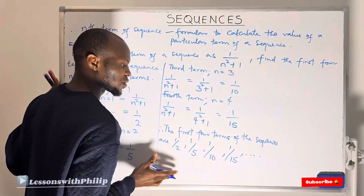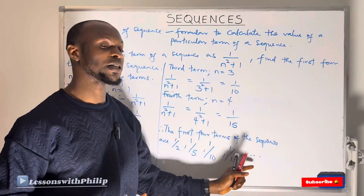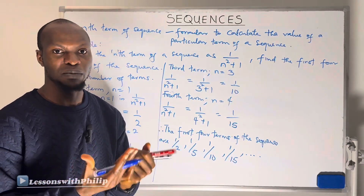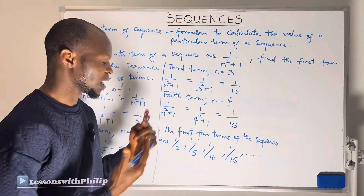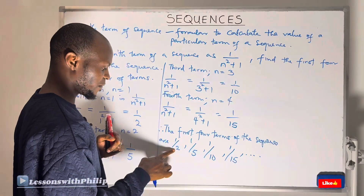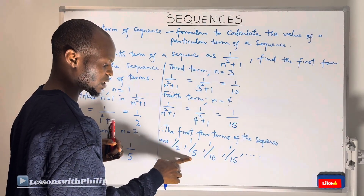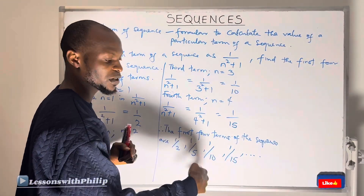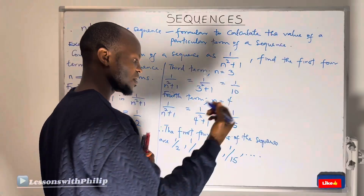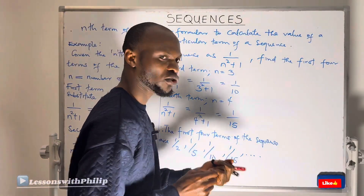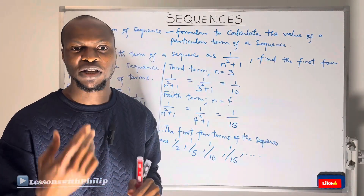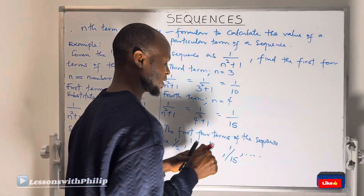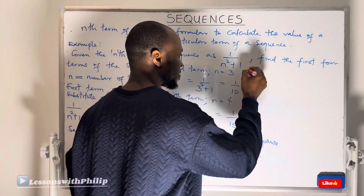The sequence will continue like that. If I had to find the sixth term, it would continue in the same way. This is how we calculate the terms of a sequence. The first term is 1/2, the second is 1/5, the third is 1/10, and 1/17 is the fourth term.